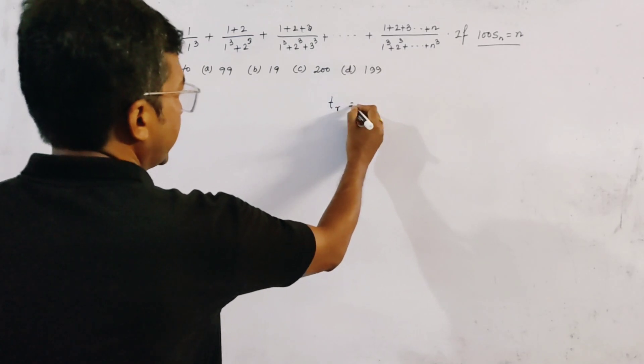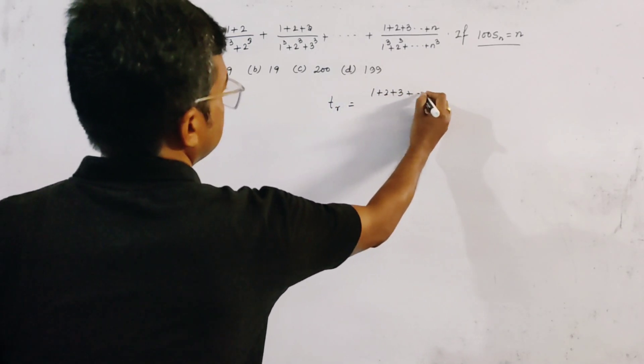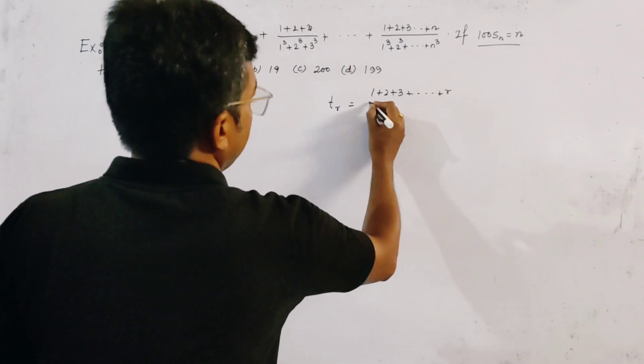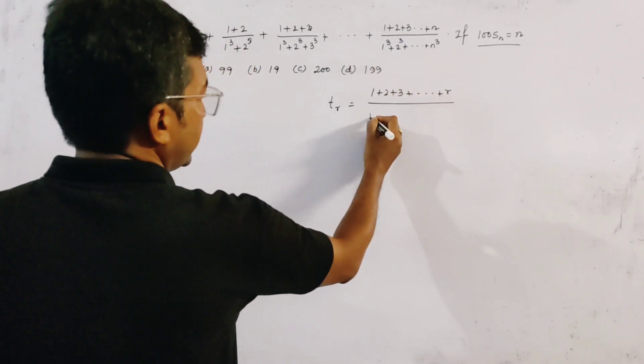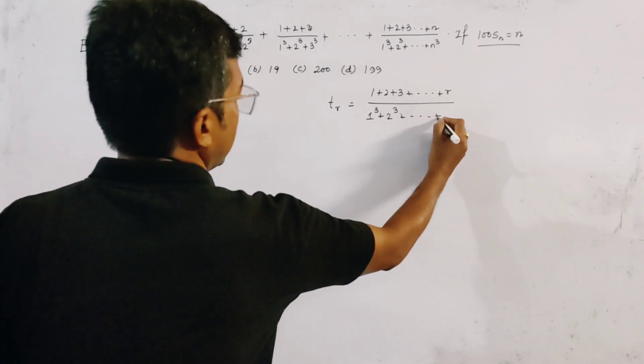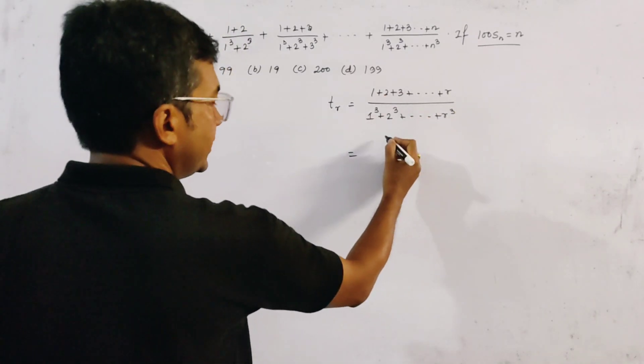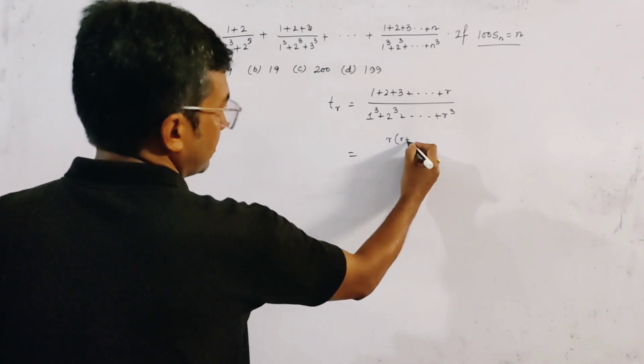The r-th term tr is given by (1+2+3+...+r) in the numerator and (1q+2q+...+rq) in the denominator. We know that the sum of this is r(r+1)/2 and the denominator is r(r+1)q/2.